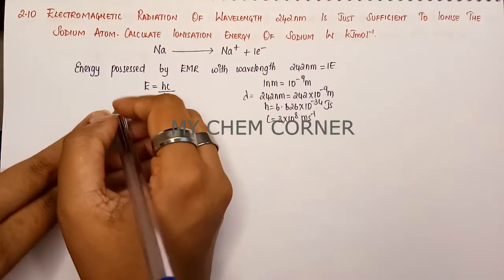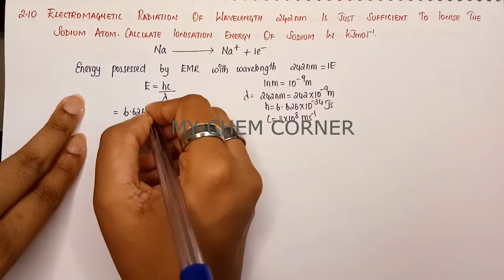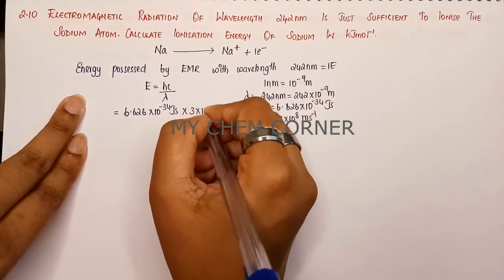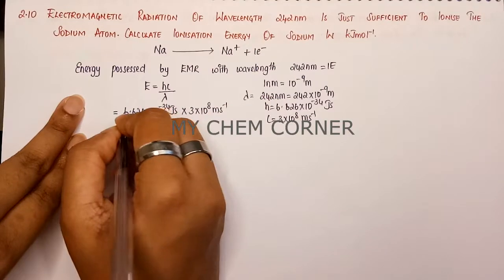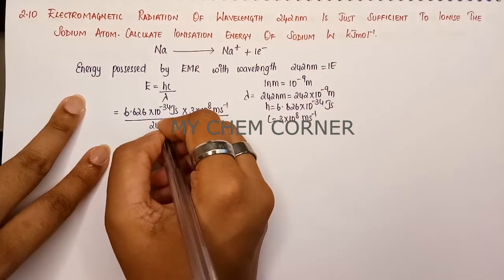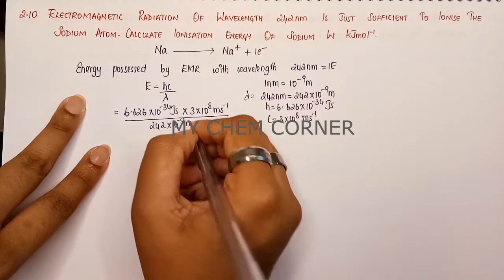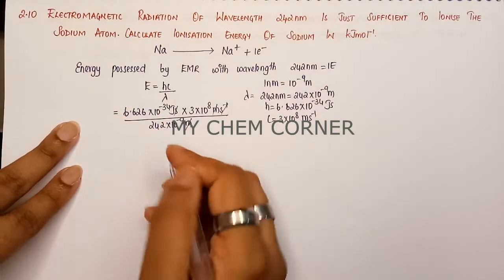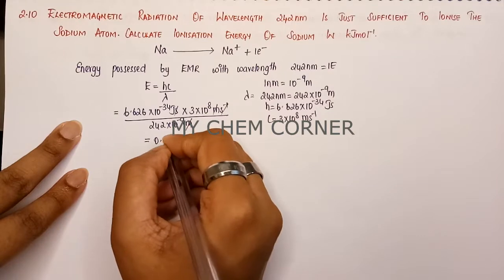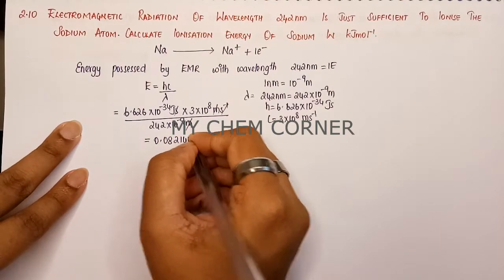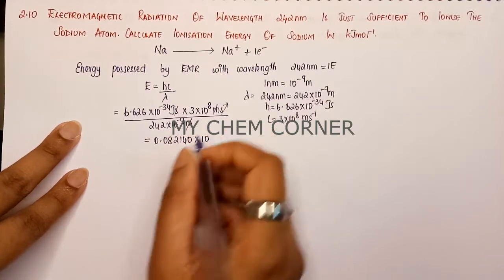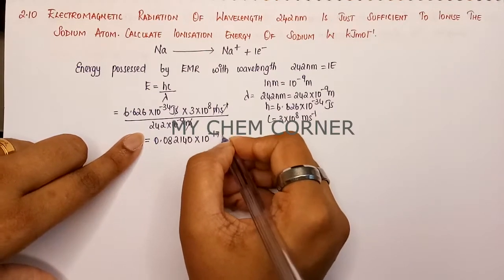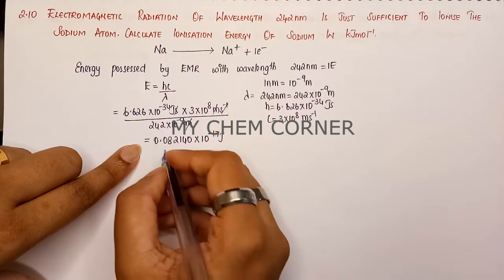Substituting all values: E = (6.626 × 10⁻³⁴ joule·second) × (3 × 10⁸ meter per second) divided by (242 × 10⁻⁹ meter). The meter and meter cancel, seconds and inverse seconds cancel. Simplifying, we get 0.08214 × 10⁻¹⁷ joules, which shifting the decimal by two places becomes 8.2140 × 10⁻¹⁹ joules.